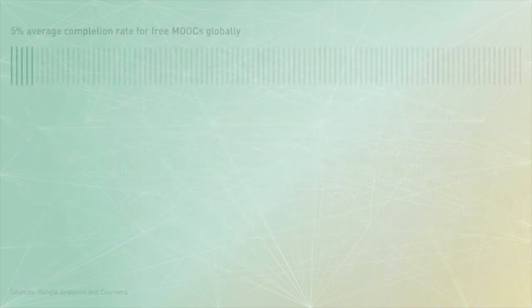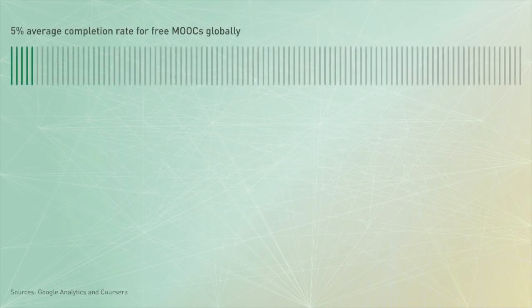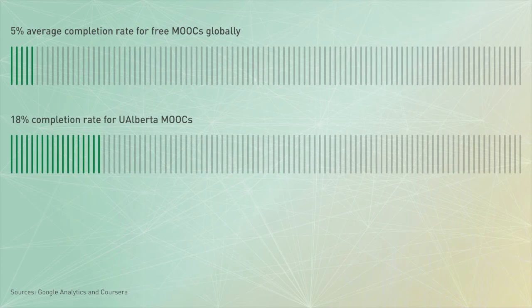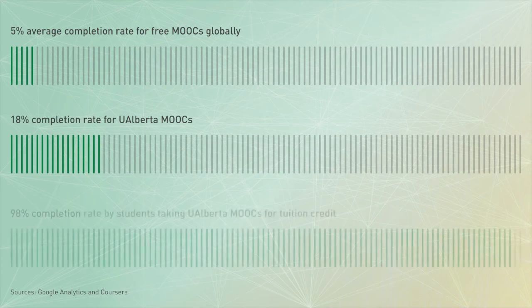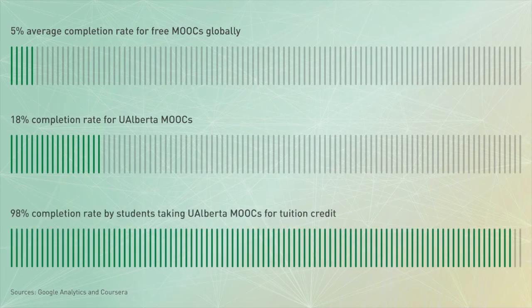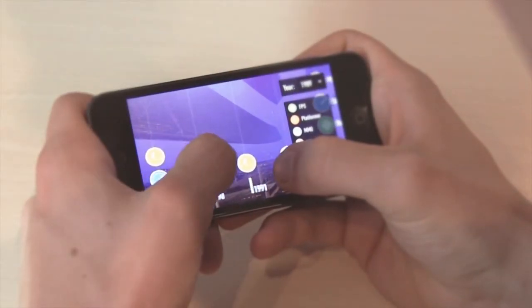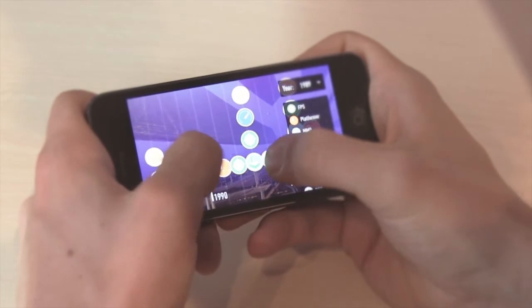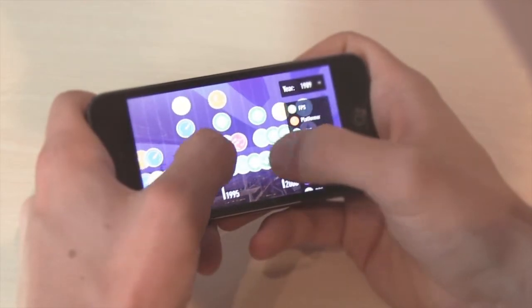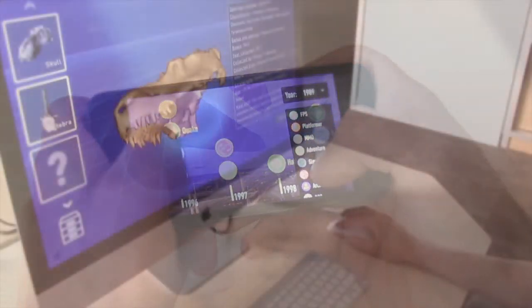Here's another important statistic: university global MOOCs have a completion rate average of just 5% when offered for free. But our University of Alberta MOOCs have an 18% completion rate, and a 98% completion rate by UAlberta students taking them for tuition credit. How are we getting such different results? Because we have used big data insights from gaming and online behavior patterns to craft a completely different MOOC experience for our students.